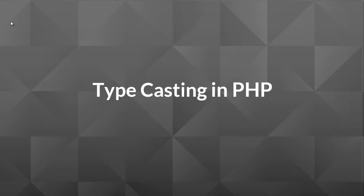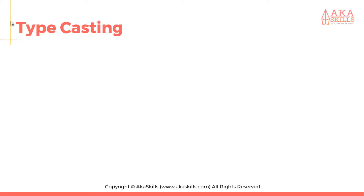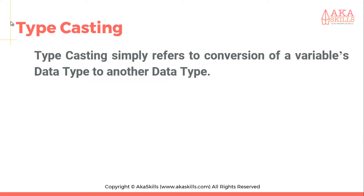In this video tutorial, we'll be discussing typecasting in PHP. This is another very important concept in PHP. Typecasting simply refers to converting a variable's data type to another data type. We've discussed data types before — strings, boolean, integers, and all the likes. So you can convert them to another. You might have a string as a number; you can convert that string to an integer, or to a float, a decimal point number.